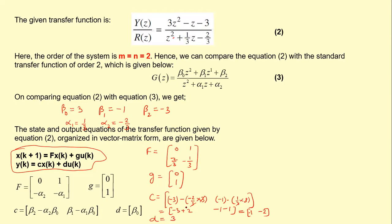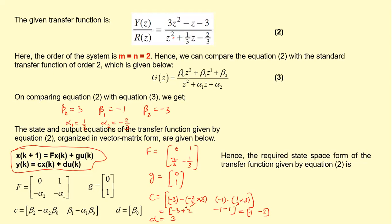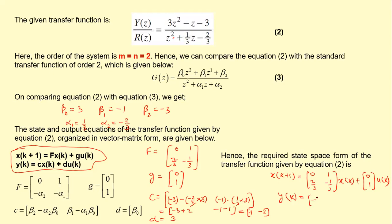The required state space form is: x(k+1) = F·x(k) + G·u(k), where F = [0, 1; 2/3, −1/3] and G = [0; 1]. The output equation is y(k) = C·x(k) + D·u(k), where C = [−1, −2] and D = 3. This is the required state space model of the transfer function given by equation number two.